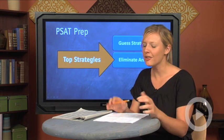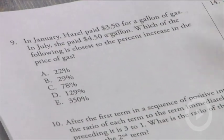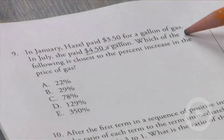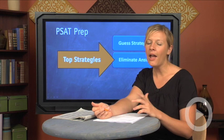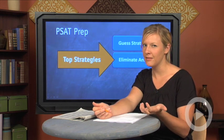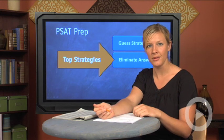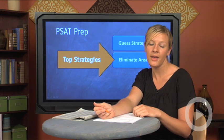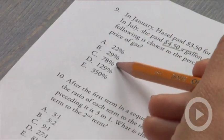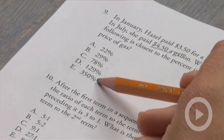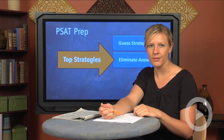Let's take a look at this first problem: In January, Hazel paid $3.50 for a gallon of gas; in July she paid $4.50 a gallon. Which of the following is closest to the percent increase in the price of gas? I always get confused with percent increase, so I'll look at the answer choices and try to eliminate one or two to guess strategically. We've got 22%, 29%, 78%, 129%, and 350%.